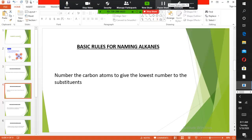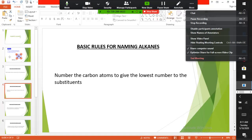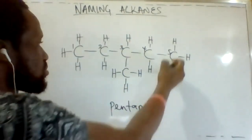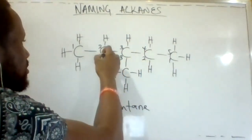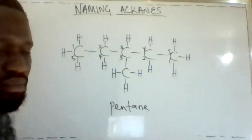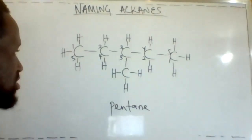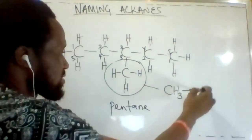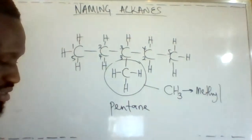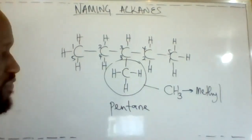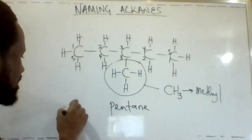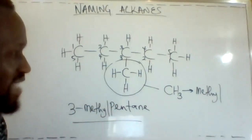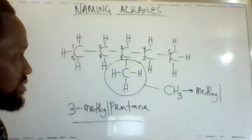Rule number two: number the carbon atoms to give the lowest number to the substituent. We have numbered from this point — the substituent is at number three. Numbering from the other end also gives three. The substituent is CH3, known as methyl. Therefore, the IUPAC name for this structure is 3-methylpentane.